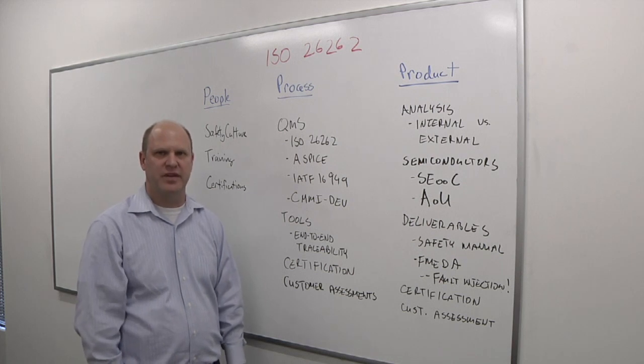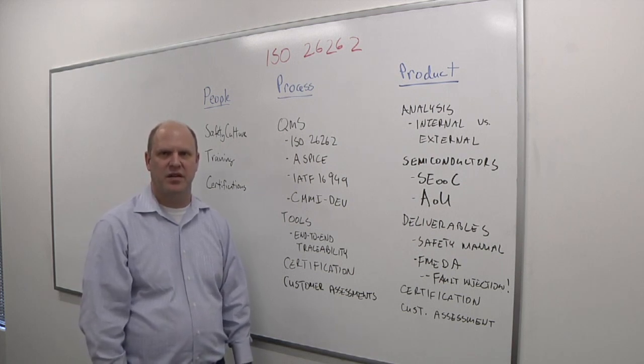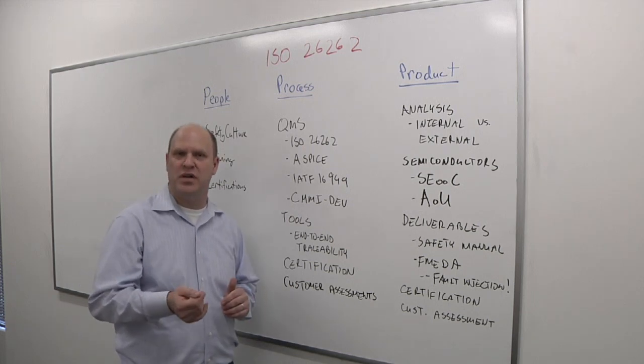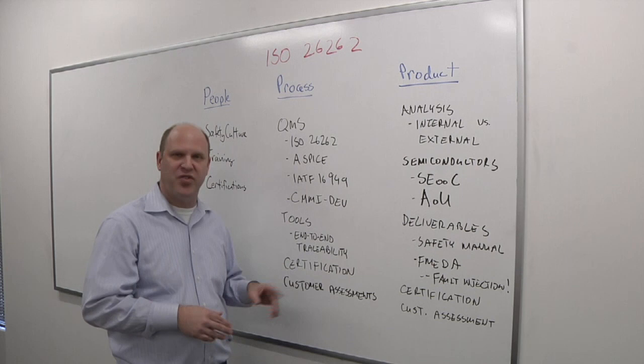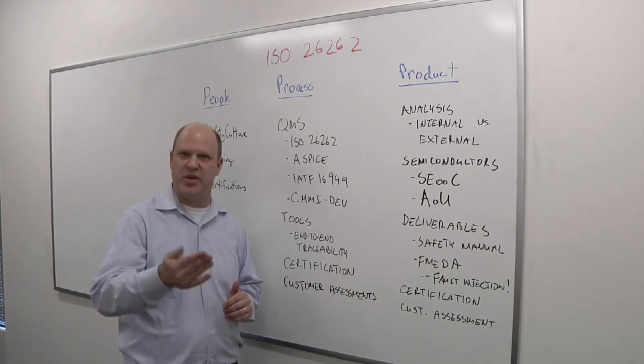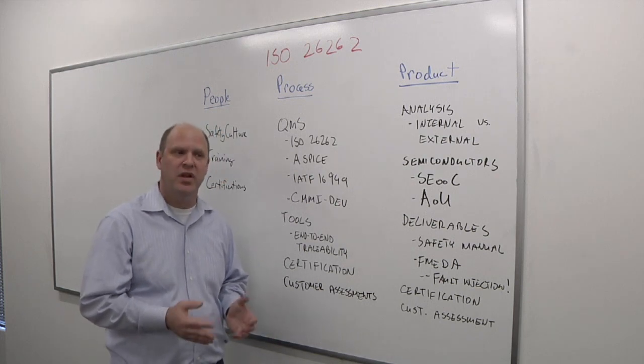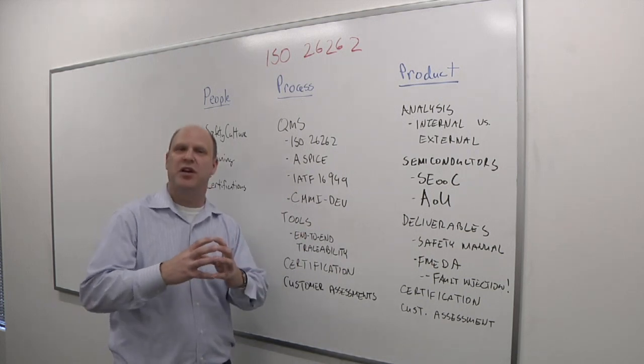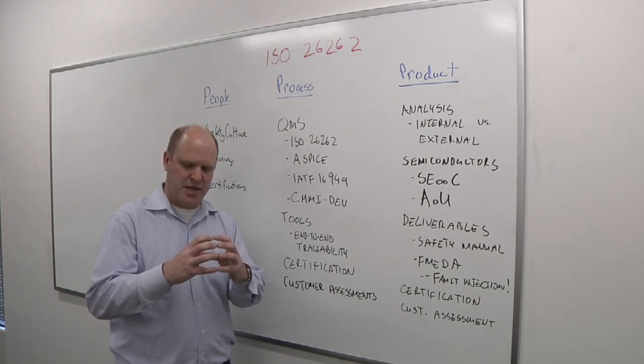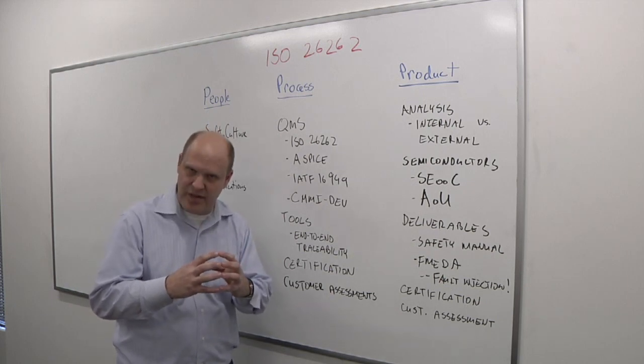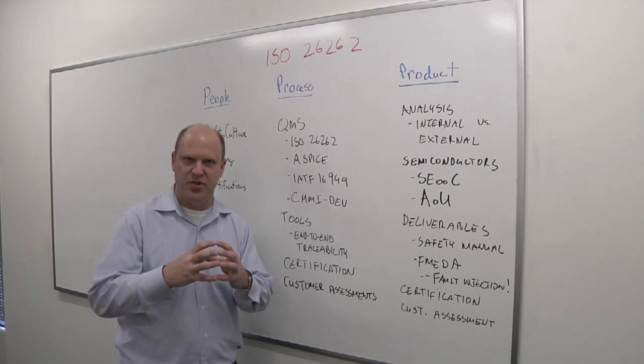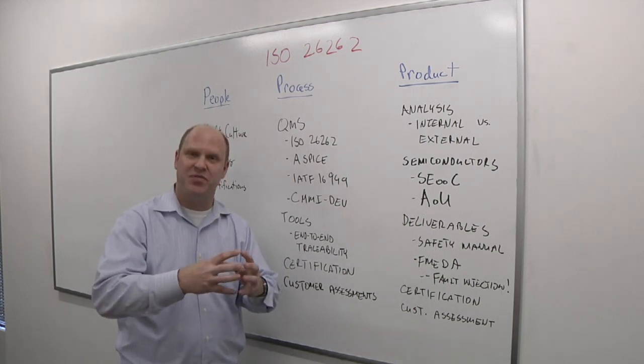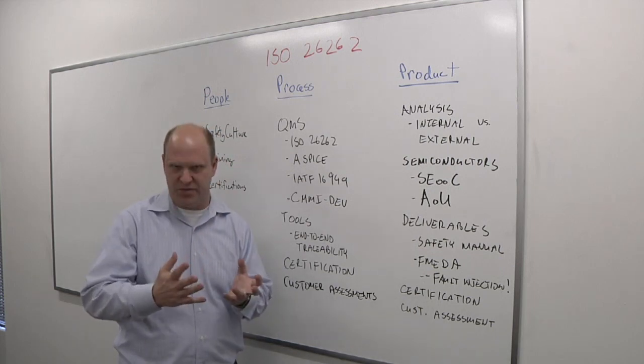Do the certifications change pretty regularly? The certifications are usually good for a set time period. For personal trainings, it's usually for about three years. For processes, it could be for a year to three years depending on the certifying body. For products, it's a little bit different. When you're looking at a semiconductor or semiconductor IP, you're looking at something that's technically not a system. It's a safety element out of context. Your product will be certified for a particular set of assumptions of use.